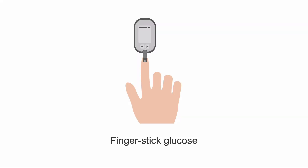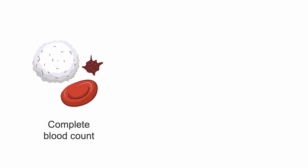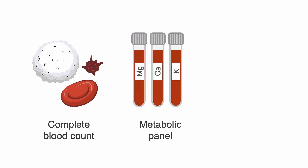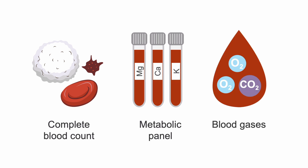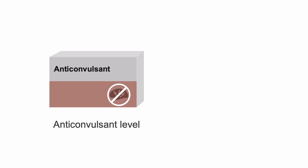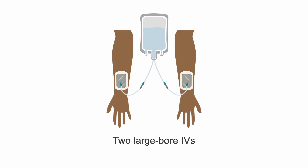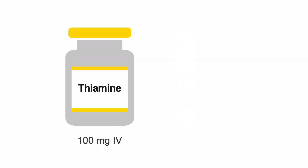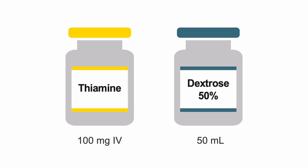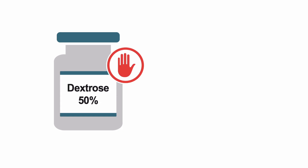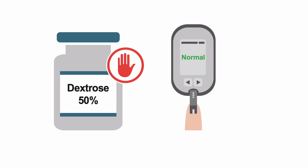Obtain a finger stick glucose. Obtain a complete blood count, metabolic profile with serum magnesium and calcium levels and liver function tests, and arterial blood gases. Also obtain anticonvulsant levels if appropriate and a toxicology screen. Place two large-bore IVs and run maintenance normal saline. Give thiamine 100 mg IV and dextrose 50 mL of 50% if a newly presenting patient has no known history of a seizure disorder or definitive etiology. Hold dextrose if finger stick glucose is within normal range or is elevated.